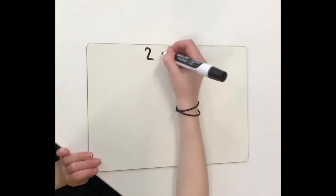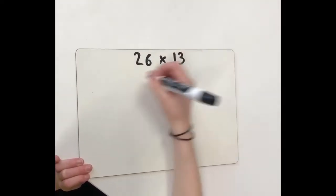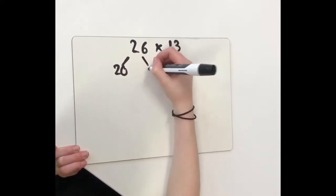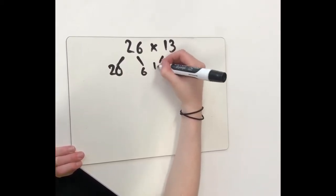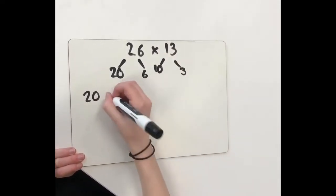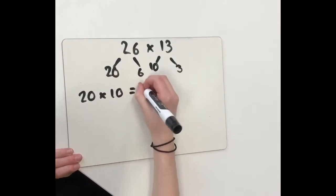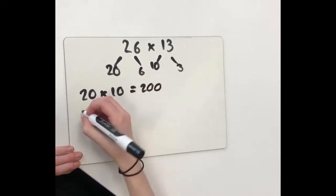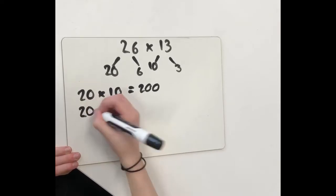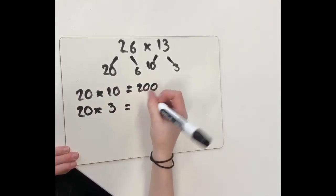I've took 26 and 13 and partitioned 26 into 20 and 6, and 13 into 10 and 3. I've took 20 times 10 and the answer is 200. I've took 20 and 3 and the answer is 60.